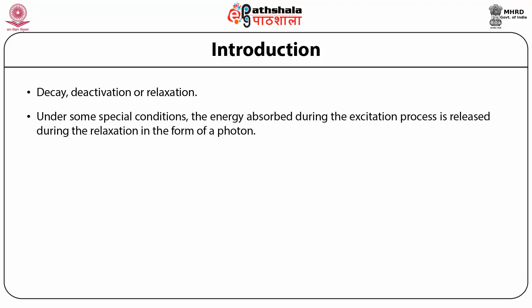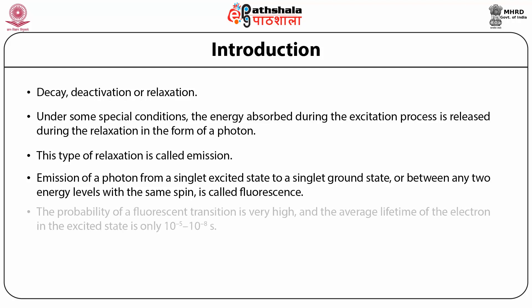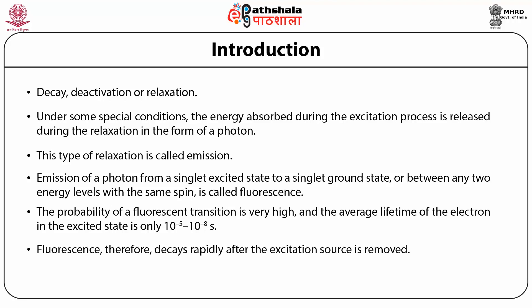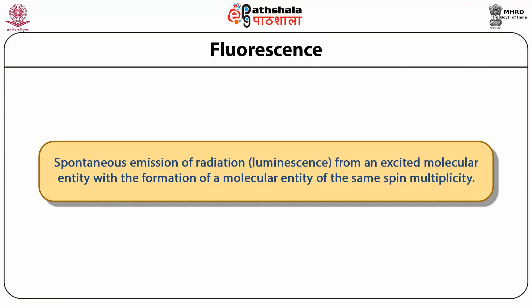Under some special conditions, the energy absorbed during excitation is released in the form of a photon, and this type of relaxation is called emission. Emission of a photon from singlet excited state to a singlet ground state, or between any two energy levels with the same spin, is called fluorescence. The probability of fluorescent transition is very high and the average lifetime of the electron in the excited state is 10 to the power minus 5 to 10 to the power minus 8 seconds, meaning fluorescence decays rapidly after the excitation source is removed. Per IUPAC, fluorescence is a spontaneous emission of radiation from any excited molecular entity with the formation of a molecular entity of the same spin multiplicity.